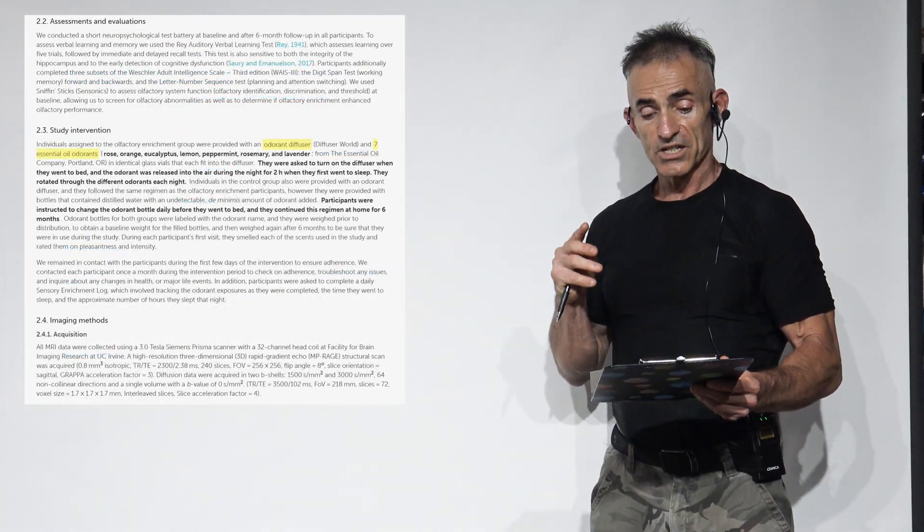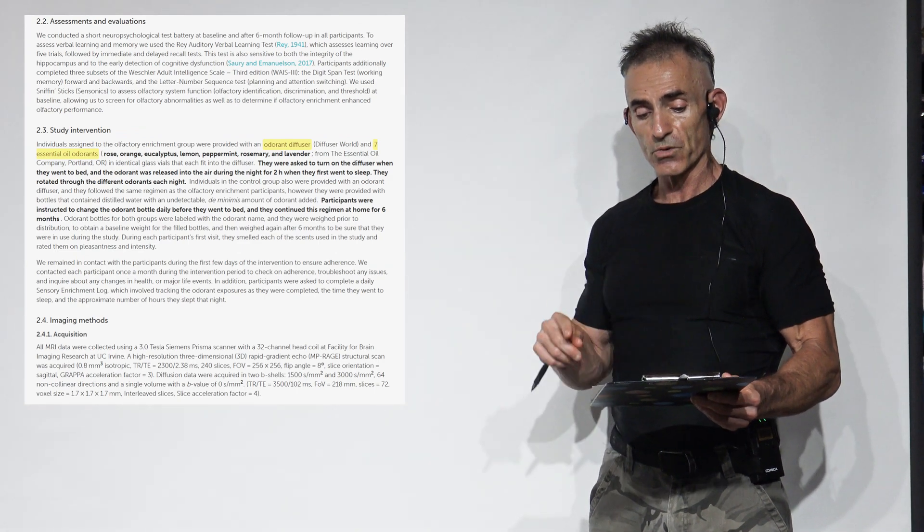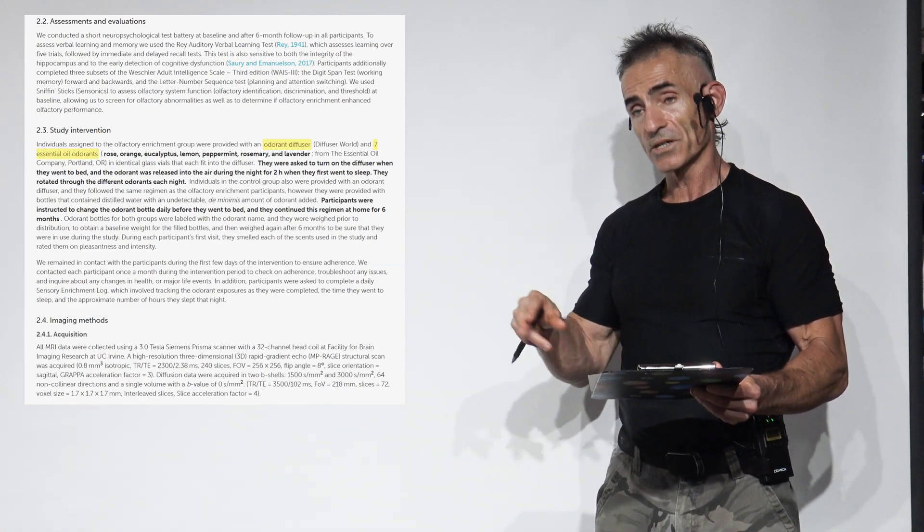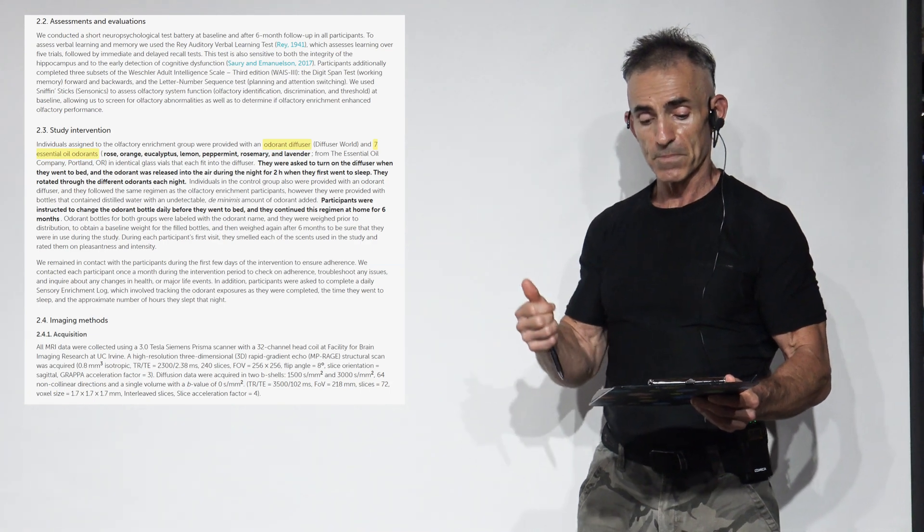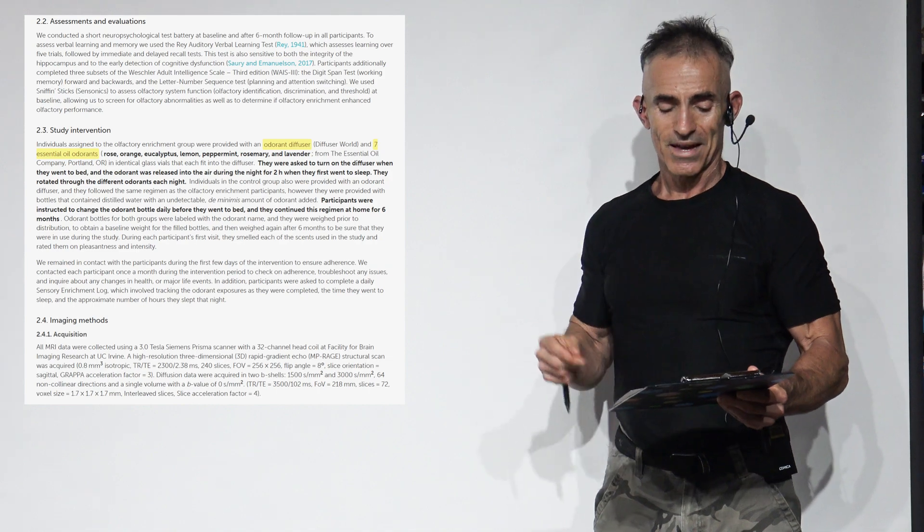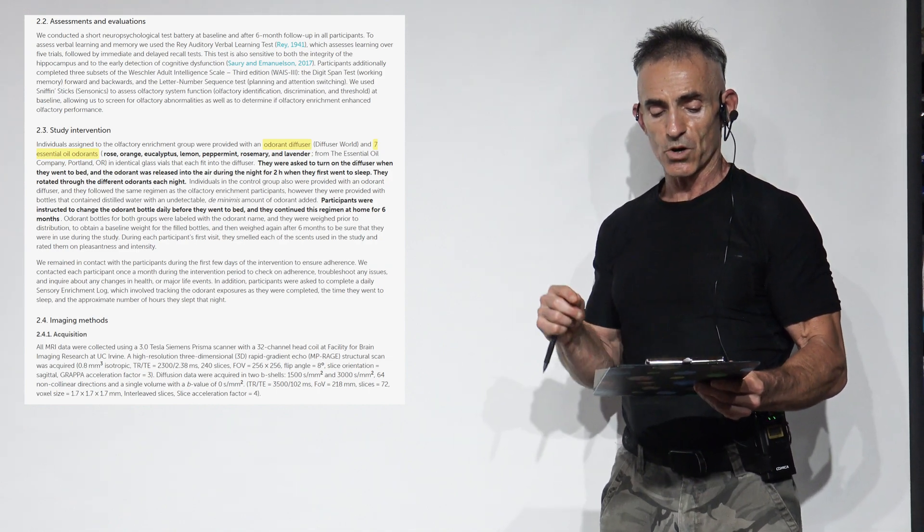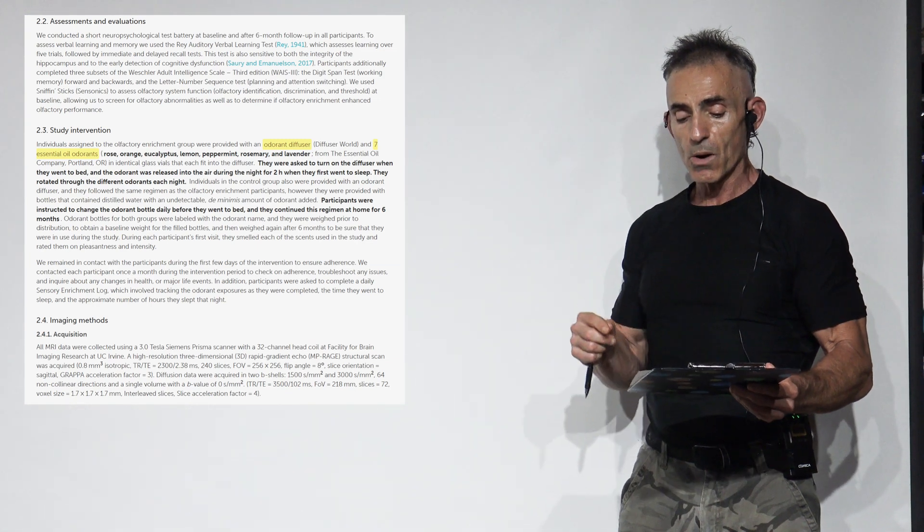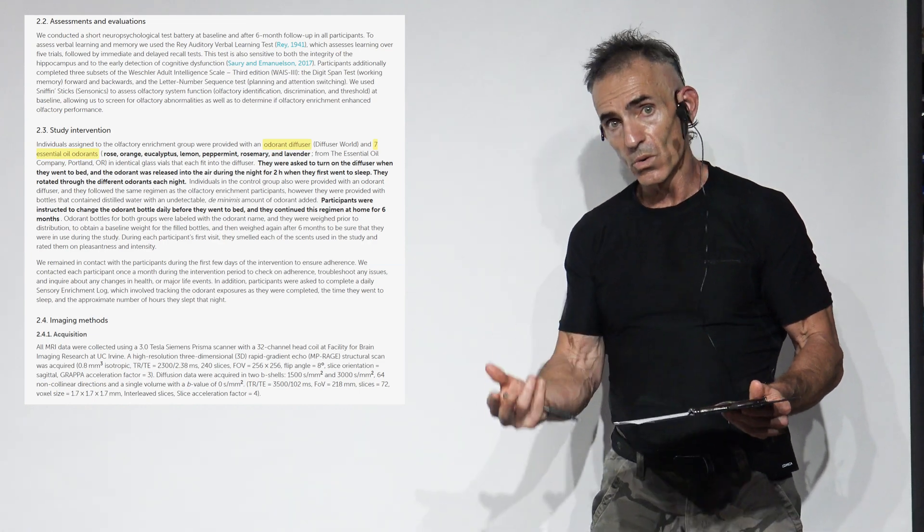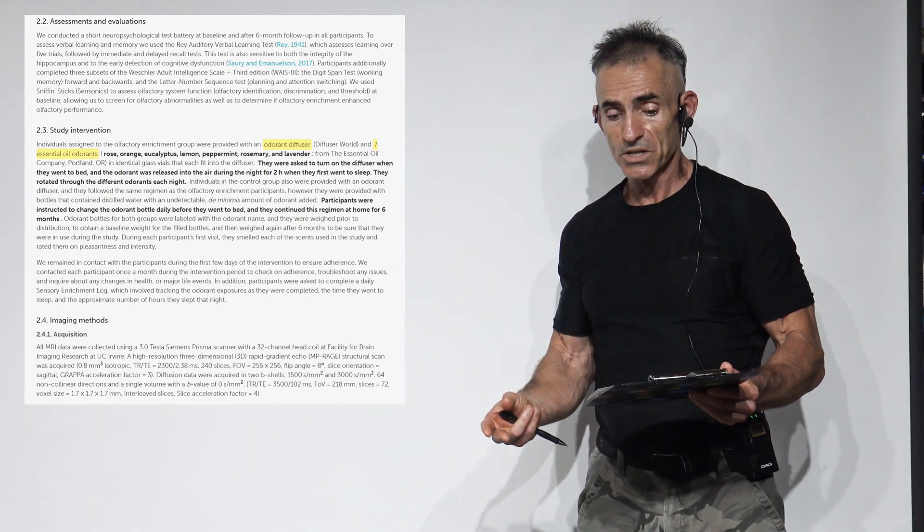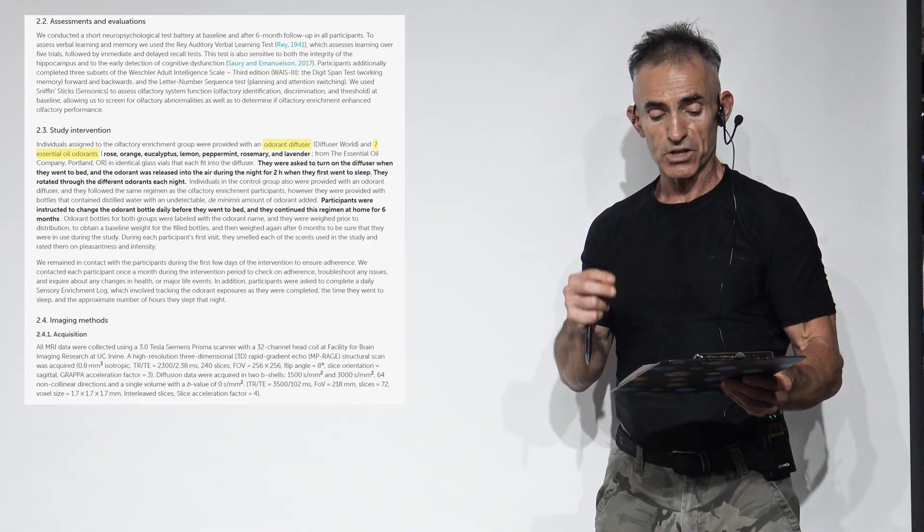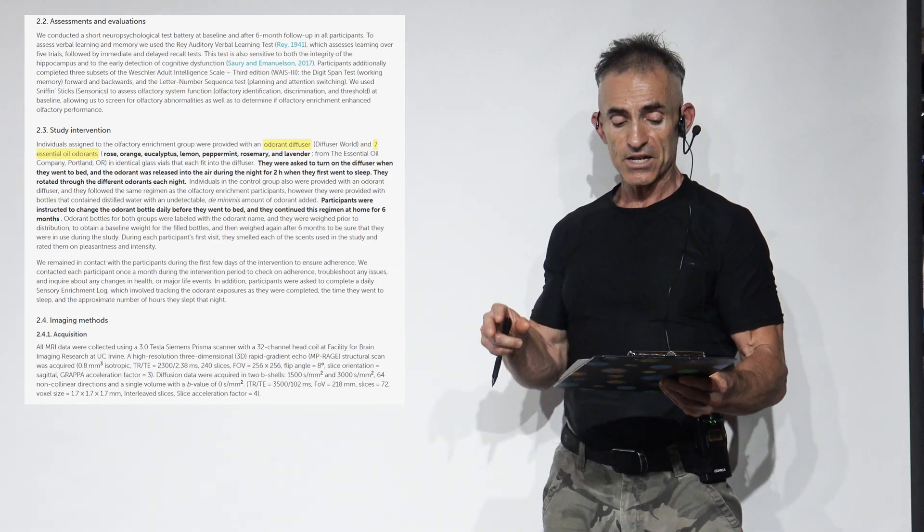The study intervention: individuals assigned to the olfactory enrichment group were provided with an odorant diffuser and seven essential odorants - rose, orange, eucalyptus, lemon, peppermint, rosemary, and lavender. They were asked to turn on the diffuser when they went to bed and the odorant was released into the air during the night for two hours when they first went to sleep. They rotated through the different odorants each night.